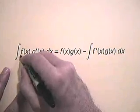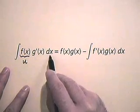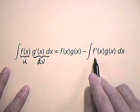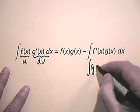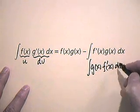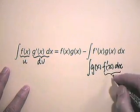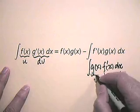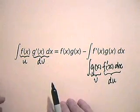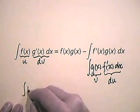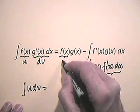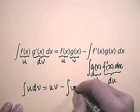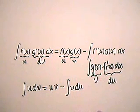I'm going to think of f(x) as being u, and g'(x) dx as the differential dv. Over here in this integral, think of g(x) times f'(x) dx: if u is f(x), then f'(x) dx becomes du; and if v is g(x), then dv is g'(x) dx. Consequently, what I have here is simply: integral u dv equals uv minus integral v du.